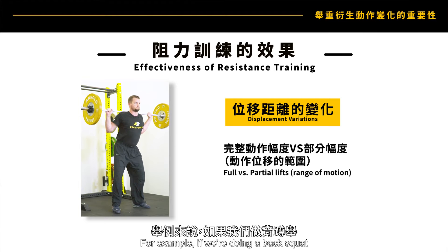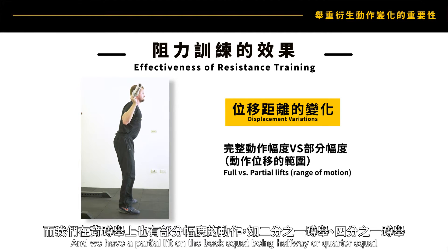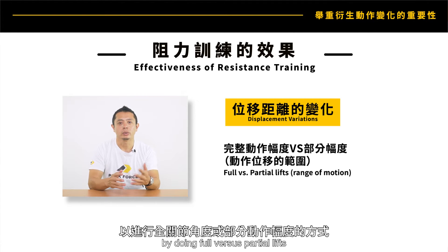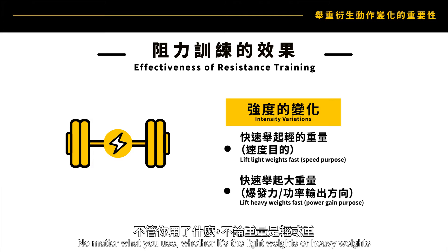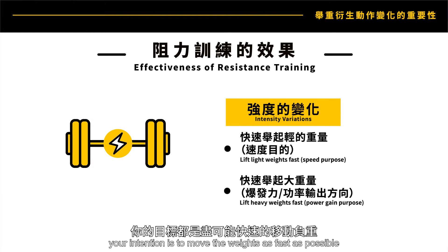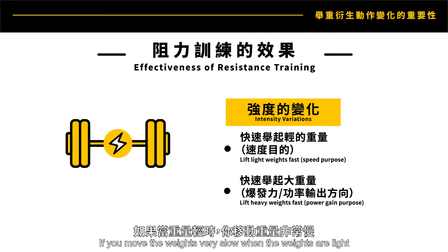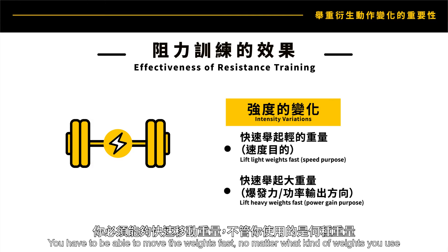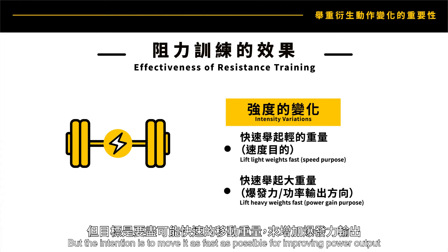Displacement variation refers to the full range of motion versus partial range of motion of each lift. For example, a back squat can go all the way down as a full range of motion, or be done as a half or quarter squat as a partial lift. We can change intensity and training volume by doing full versus partial lifts. The third variation is intensity — no matter what weight you use, your intention is to move the weights as fast as possible to improve power. Even with heavy weights where you can't move fast, the intention to move maximally is what drives power output.